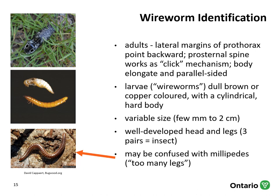The common name 'click beetle' comes from a structure on their body called a prosternal spine that works as a click mechanism. If you place the adult on its back, it would click this structure to right itself. The adult body is generally elongated and parallel-sided. The larvae or wireworms are a dull brown or copper color with a cylindrical hard body. They have three well-developed pairs of legs and a well-developed head capsule, and can range from a few millimeters to over two centimeters or longer in length. They are often confused with millipedes, but millipedes are not insects and have many more legs — insects have three pairs of legs.